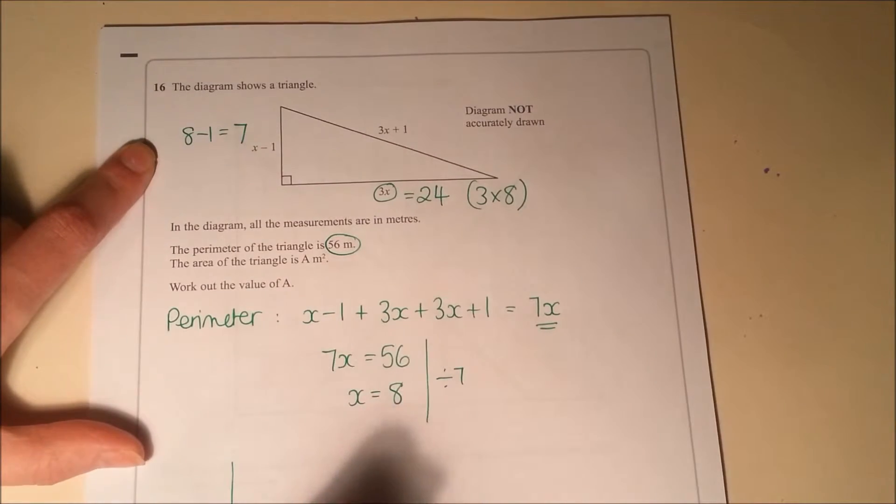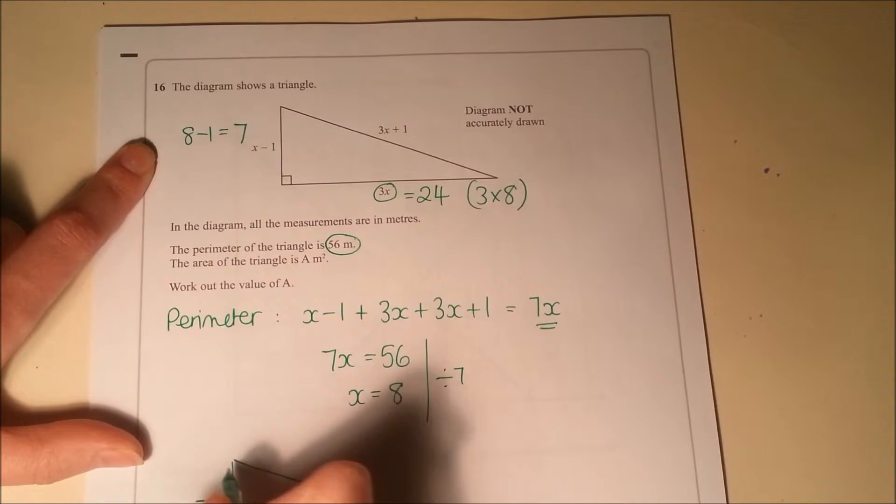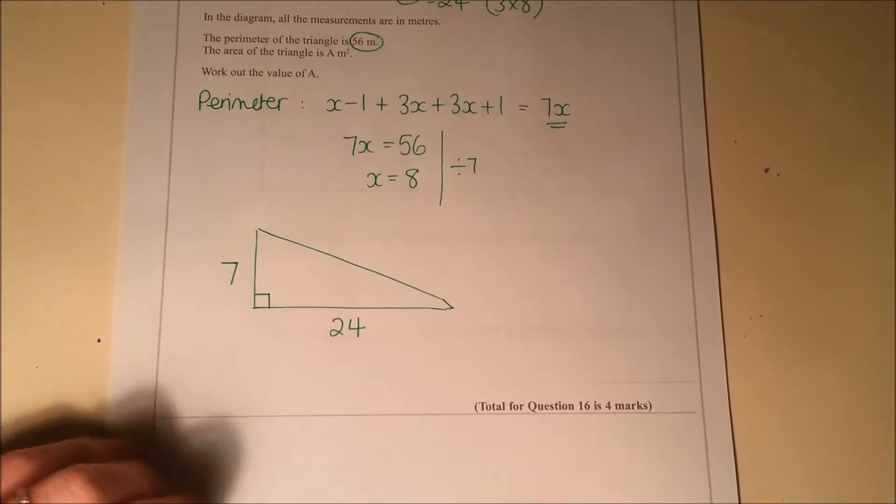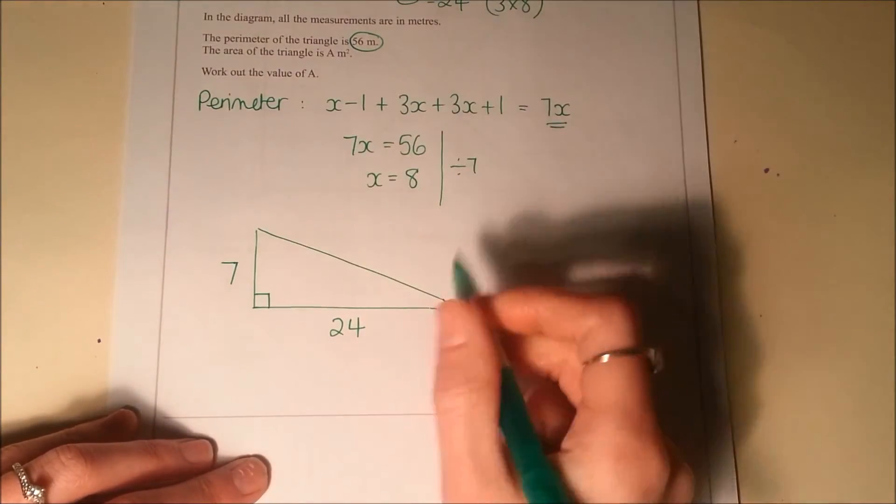So what I've now got essentially is a triangle with a base of, sorry, a base of 24, a height of 7. And remember we're interested in the base and height being at right angles. Just make sure you can see that. So base 24, height of 7.